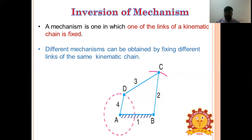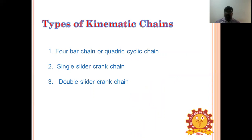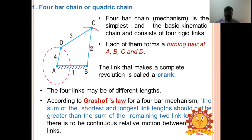Kinematic chains are classified into three types: four-bar chain (quadratic cyclic chain), single slider crank chain, and double slider crank chain. The four-bar chain is the most fundamental and simplest kinematic chain. It has four links, all connected by turning pairs.